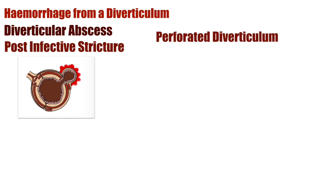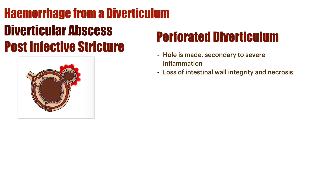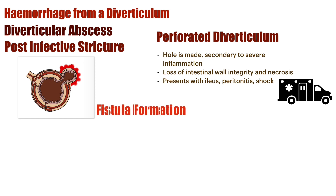The next complication is a perforated diverticulum — very worrisome. It is essentially a hole that forms secondary to inflammation. When a diverticulum pops, there is loss of intestinal wall integrity and necrosis — dying of the tissue. This presents with ileus, peritonitis, and shock. You really need to get to hospital, and it essentially requires surgery.